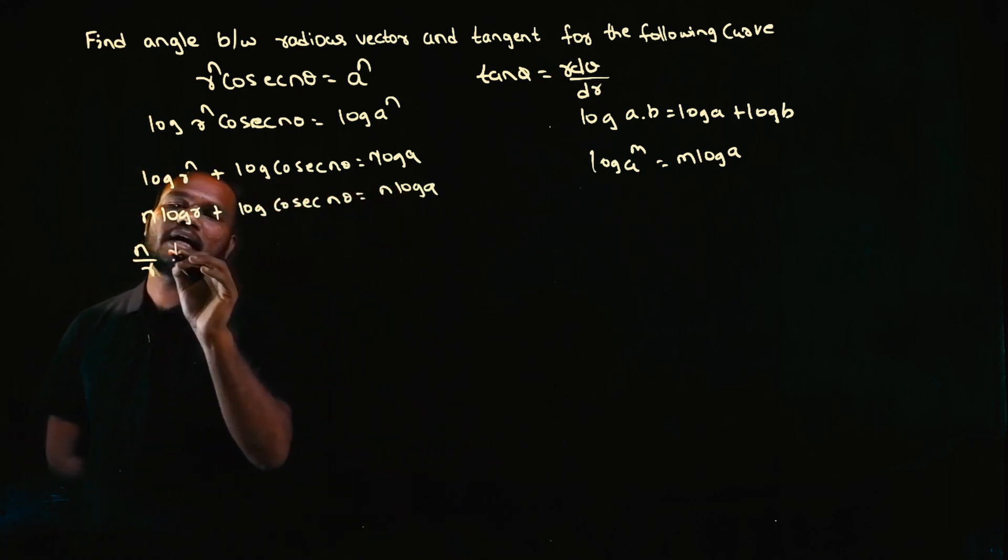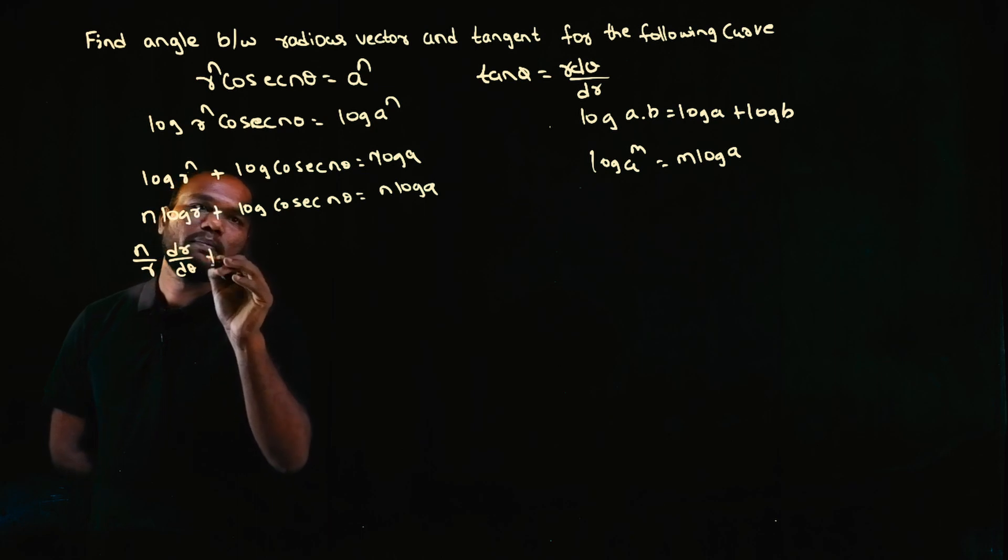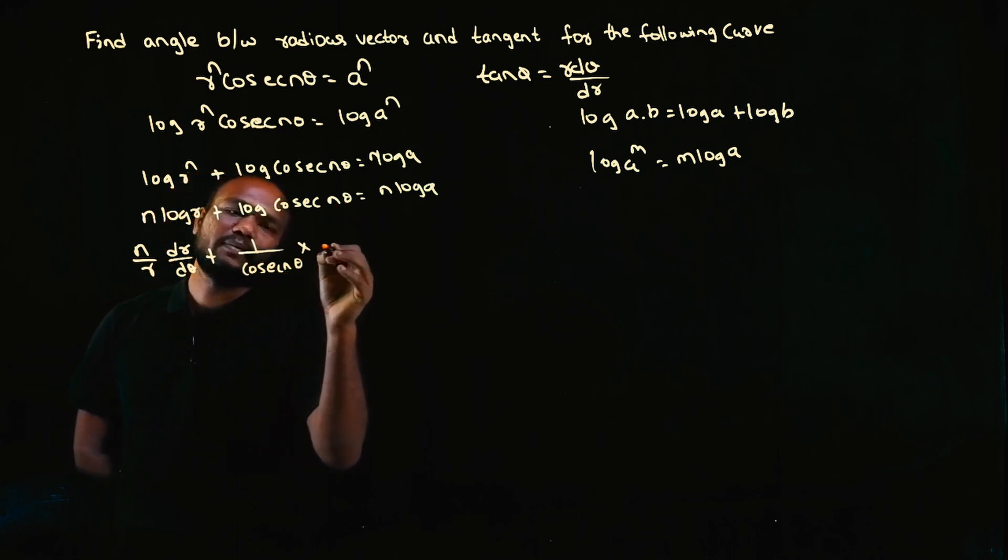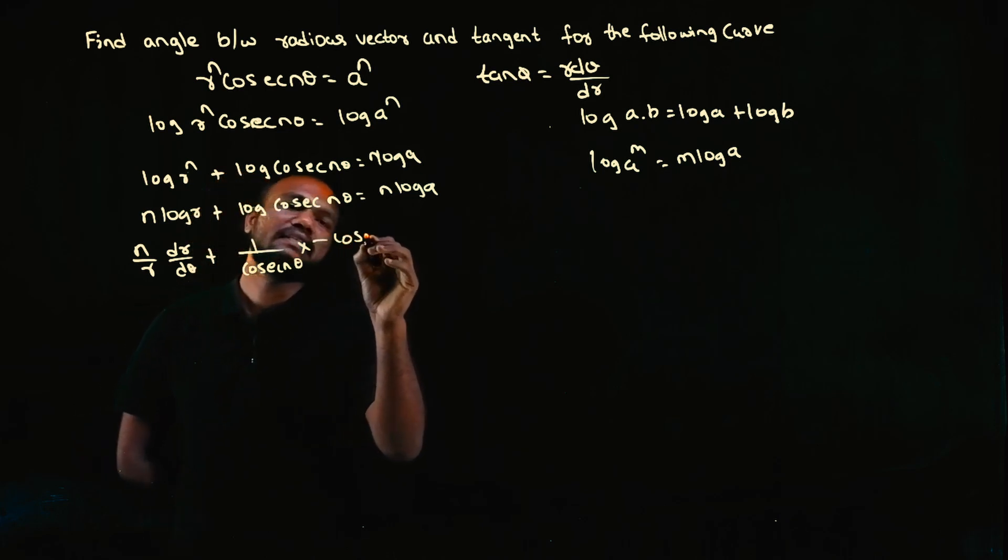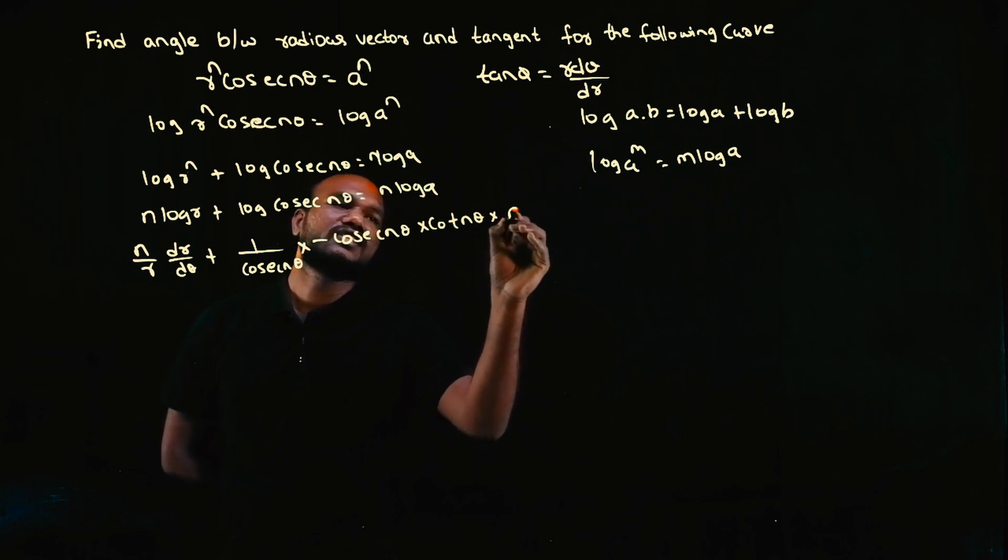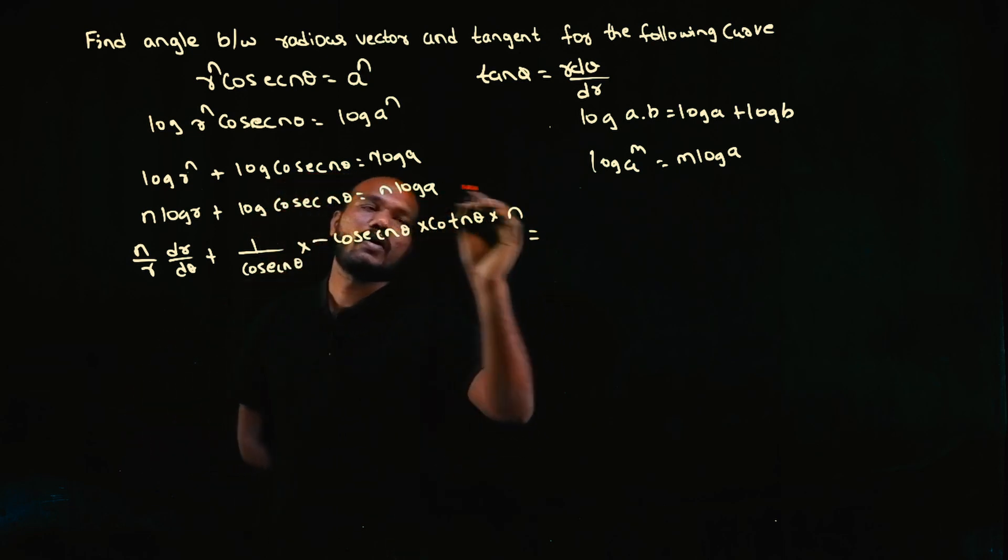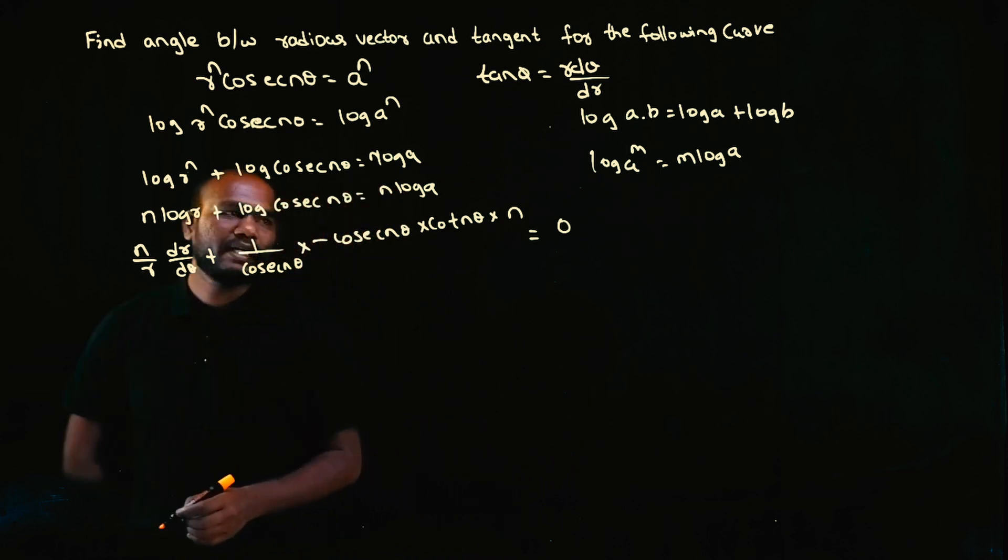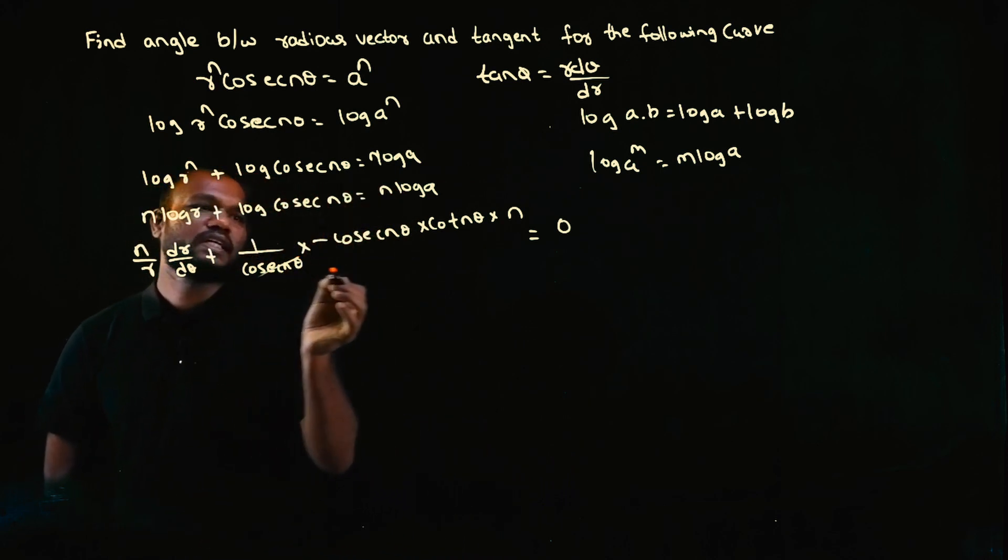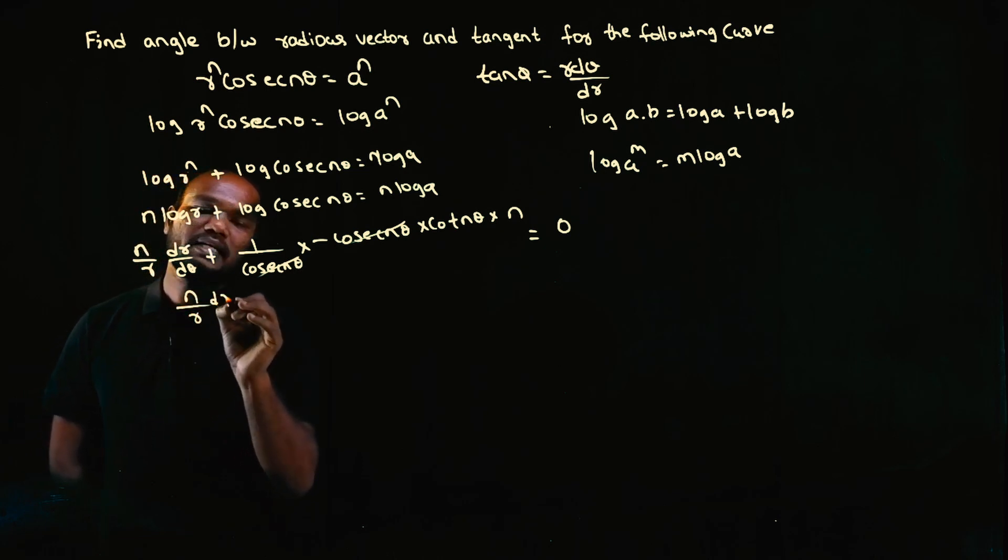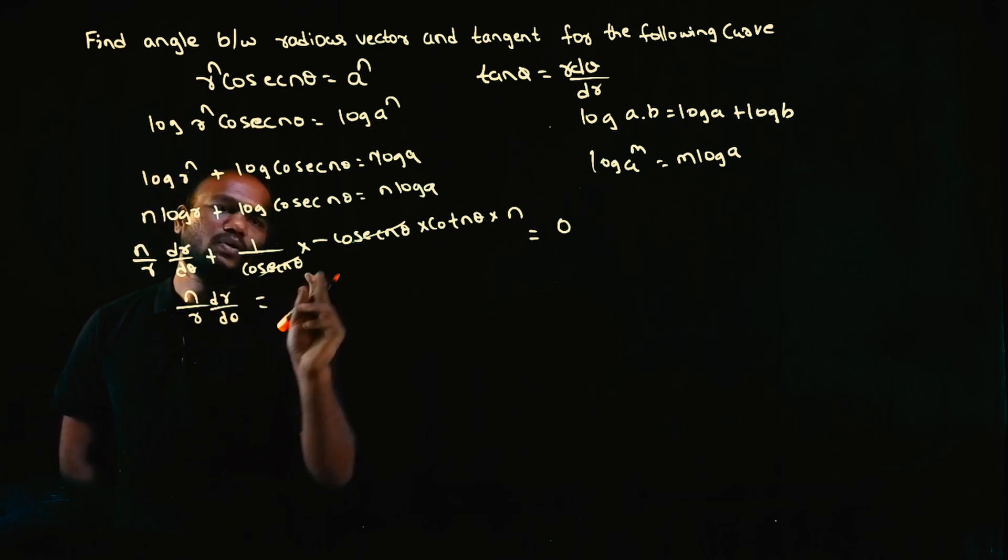n is a constant. The differentiation of log(r) is (1/r) × dr/dθ. Plus log(cosec(nθ)) differentiates to (1/cosec(nθ)) × cosec(nθ) × cot(nθ) × n. The derivative of log(a) is 0, so n×0 = 0. The cosec(nθ) terms cancel out, so (n/r) × dr/dθ equals minus, but if it goes to the other side it becomes plus, so cot(nθ) times n.